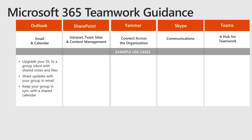One of the other things I wanted to classify each one of these tools with is an interaction, audience, tone, and sharing, because that will really help you guide which tool you should be using. The interaction with Outlook is kind of slow — you send an email, you don't expect a real-time response. Your audience is going to vary from sending an email to a single participant to potentially a whole division or the whole company. In terms of its tone, it's generally quite formal. You've got time to craft your email before you send it. In terms of sharing capabilities, relatively low — you're sharing it with those people on the to list. To bring people in after the fact is something that you have to do manually, rather than if you were to post it to a community where people can join and see it.